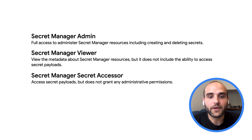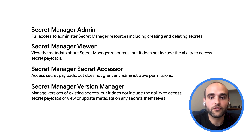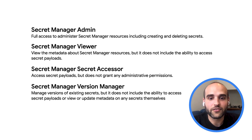Then the Secret Manager Secret Accessor IAM role grants the ability to access secret payloads, but does not grant any administrative permissions. This is useful for humans and applications that need to access a secret, but don't need permissions to manage those secrets. The Secret Manager Version Manager IAM role grants permissions to manage versions of existing secrets, but it does not include the ability to access secret payloads or view or update the metadata on any secrets themselves.